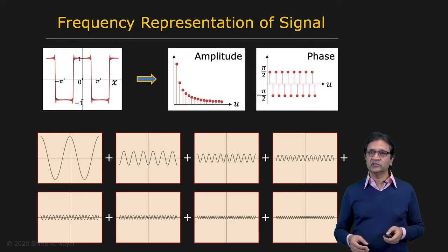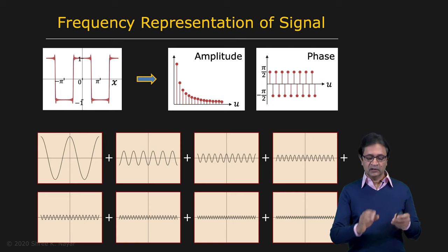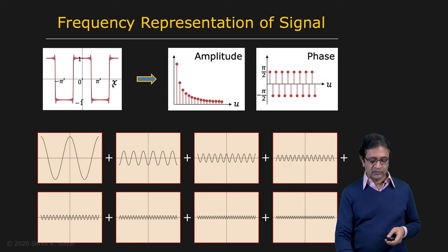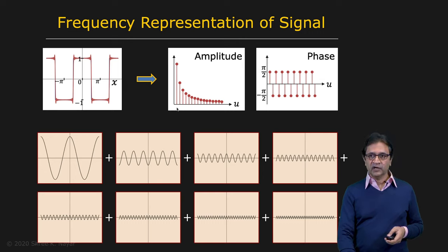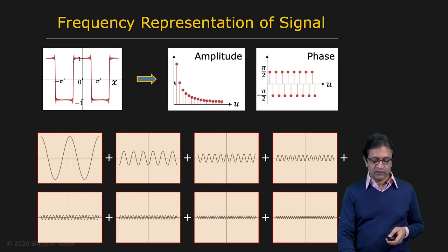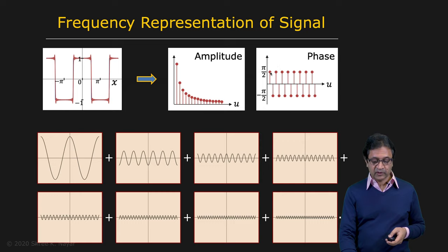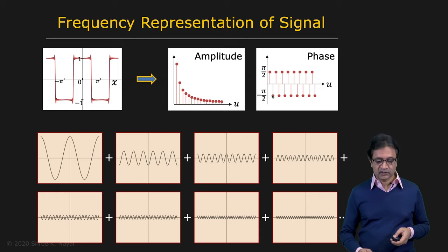So what the Fourier transform is telling you is that you can take a signal f(x), where x represents the spatial domain, and represent it in the frequency domain. U is the frequency, and you can represent it as the sum of several sinusoids of different frequencies. Here are the amplitudes of the sinusoids, and with each frequency, remember that you also have the phase. In this particular case, you see that the phase flips from π/2 to −π/2.